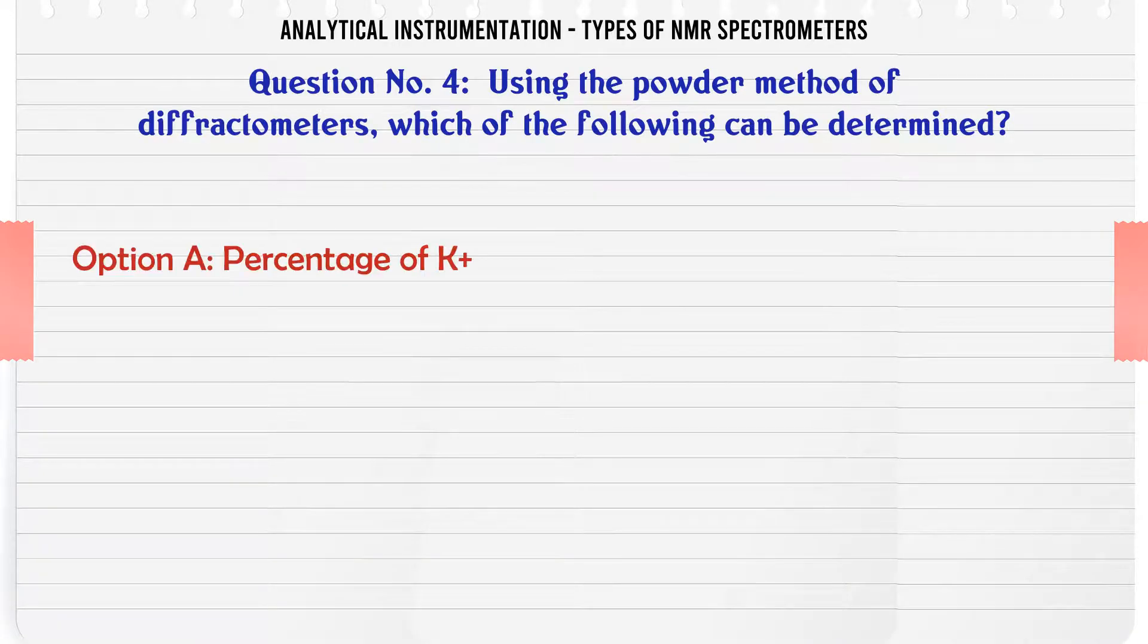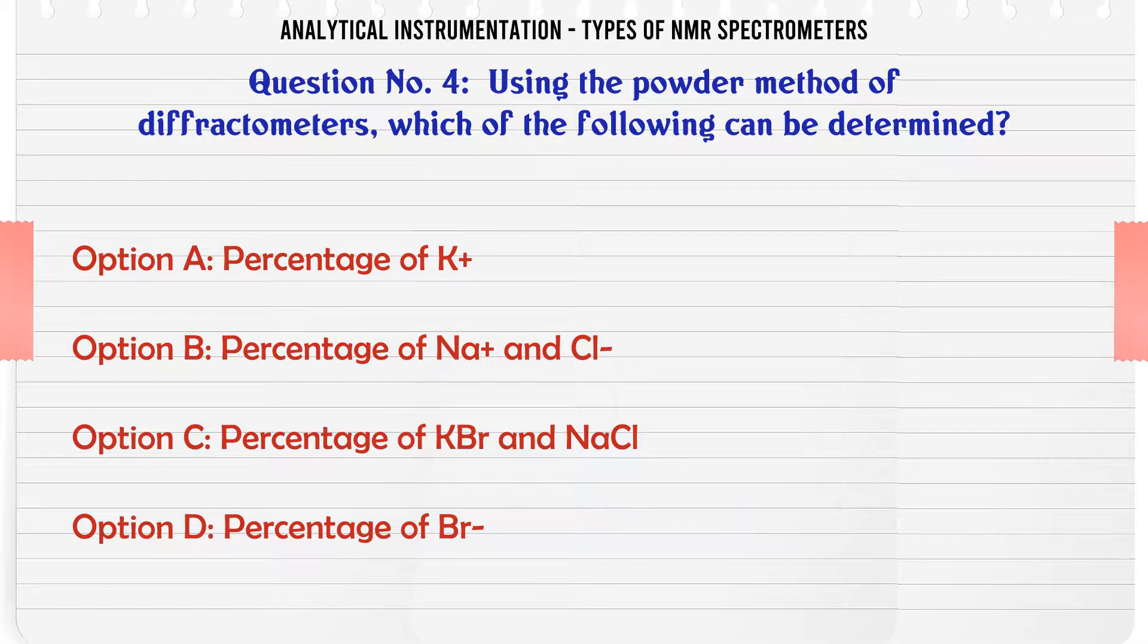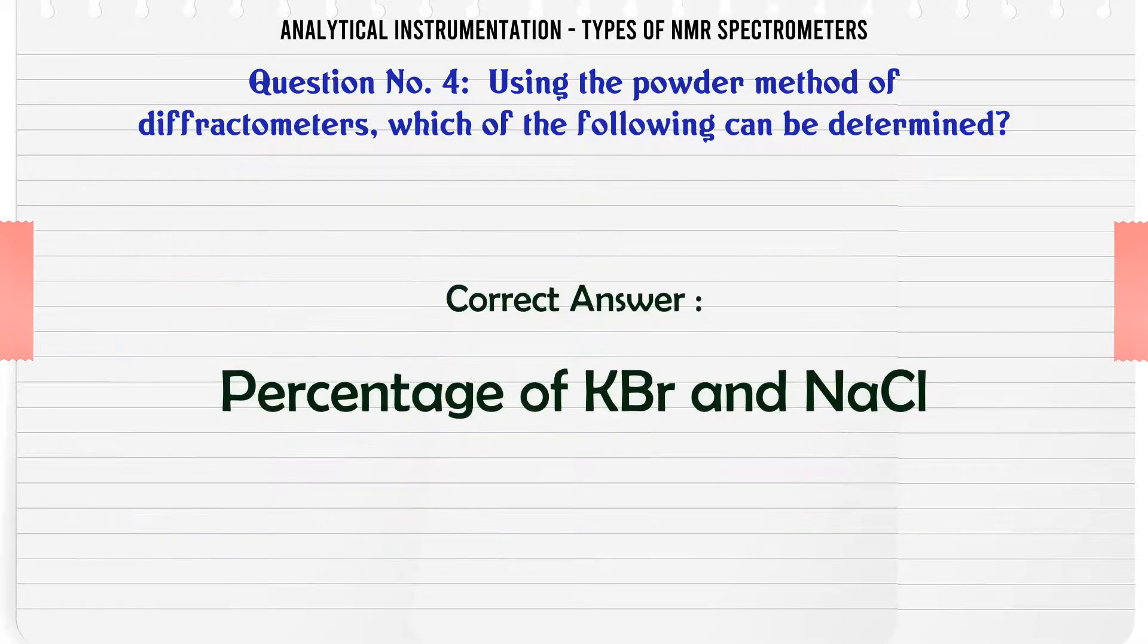Using the powder method of diffractometers, which of the following can be determined? A. Percentage of K+. B. Percentage of Na+ and Cl-. C. Percentage of KBr and NaCl. D. Percentage of Br-. The correct answer is Percentage of KBr and NaCl.